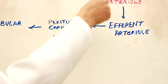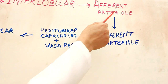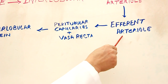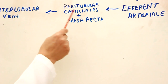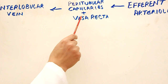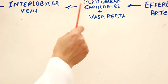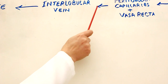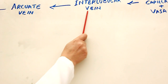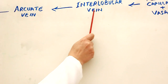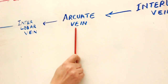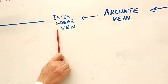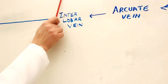The interlobular arteries give rise to afferent arterioles, which serve the glomerulus of each nephron. From the glomerulus, efferent arterioles emerge, forming a peritubular capillary network and vasa recta around the uriniferous tubules — the proximal and distal convoluted tubules. These peritubular capillaries then form the interlobular veins. The interlobular veins leave the cortex, reach the medulla-cortex junction, and become the arcuate veins, which drain into the interlobar veins. There are no lobar or segmental veins.